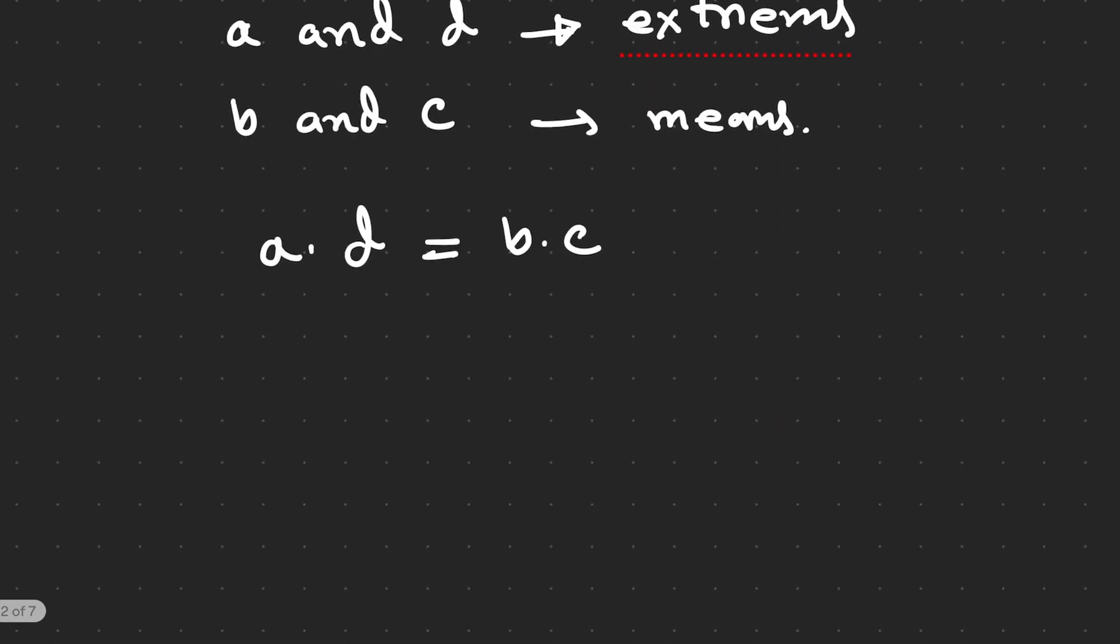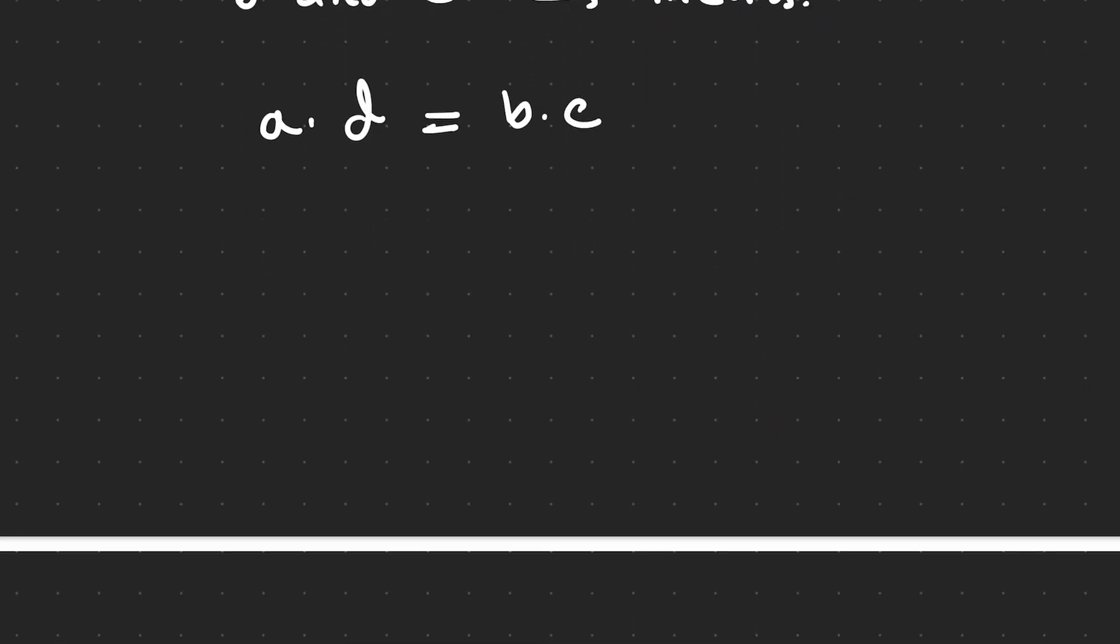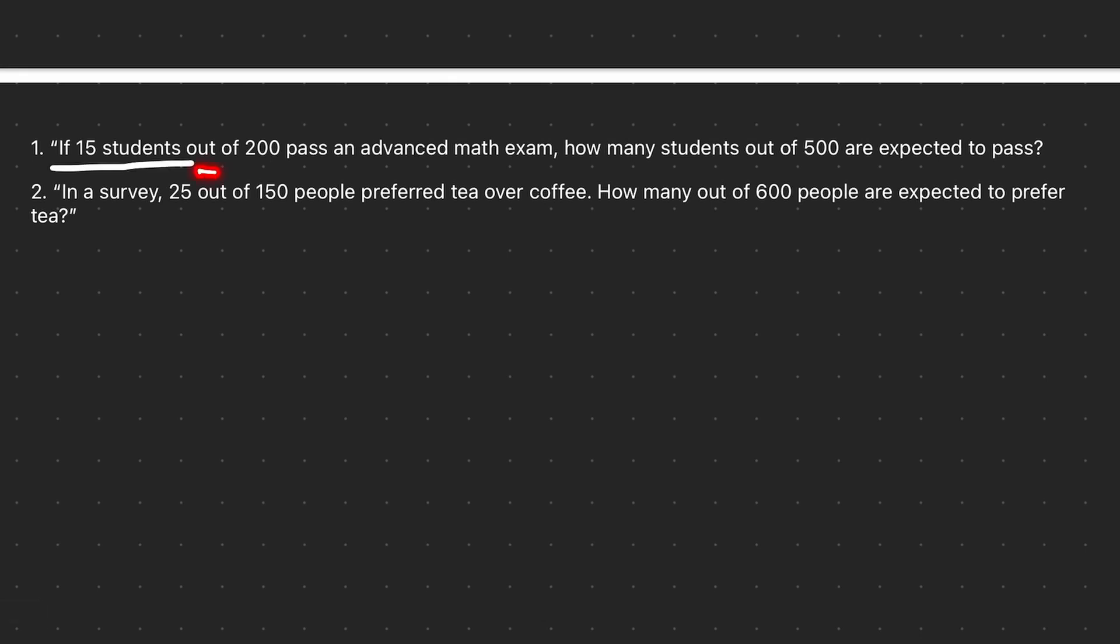We already know these things. The questions are usually very easy. Let's solve the problems. Usually questions are not so complicated. I already added two questions here. Number one: If 15 students out of 200 pass an advanced math exam, how many students out of 500 are expected to pass?